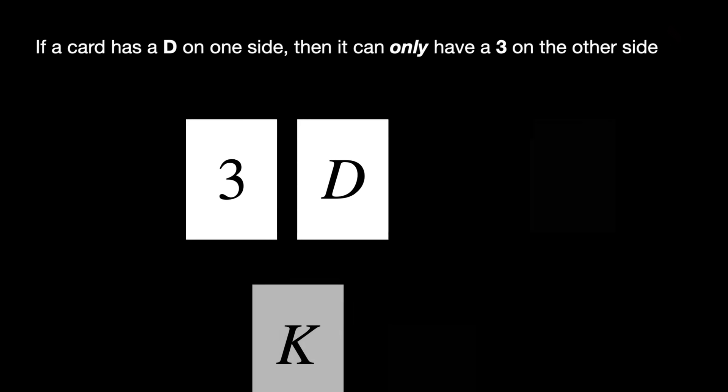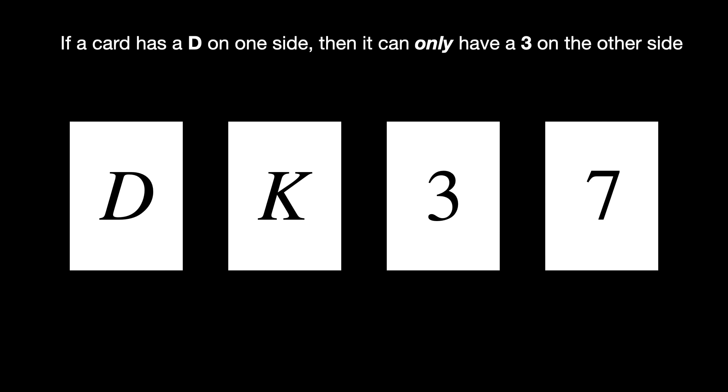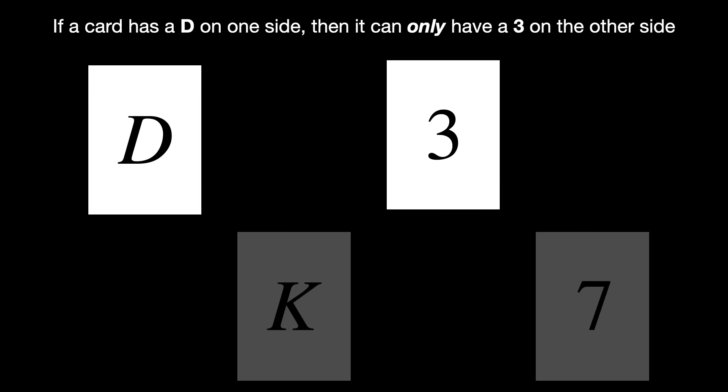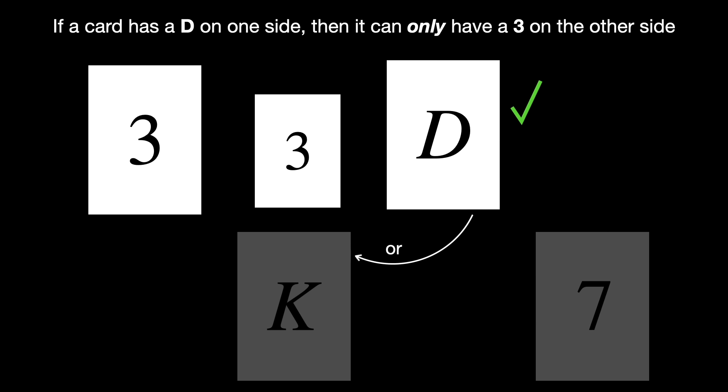The twist is that most people make the classic error of turning over D and 3, looking for confirmation instead of trying to falsify the rule, which is usually more powerful and conclusive in mathematical proofs.